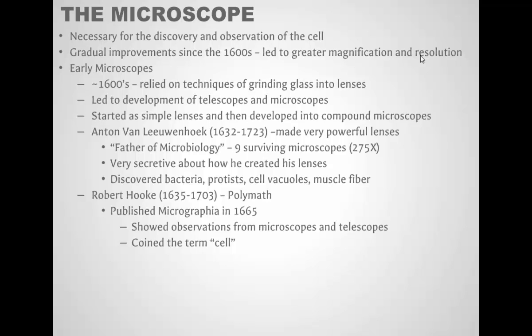Anton van Leeuwenhoek was one of the foremost innovators of the microscope. He made very powerful lenses. It's interesting - he was really secretive about his lenses that he made. He wouldn't tell anybody how he did it or share that with other scientists. But he did make very powerful lenses. He's often called the father of microbiology. There's about nine microscopes that Leeuwenhoek made that still survive to this day, and they were able to produce a magnification of up to 275 times, which was very good at the time.